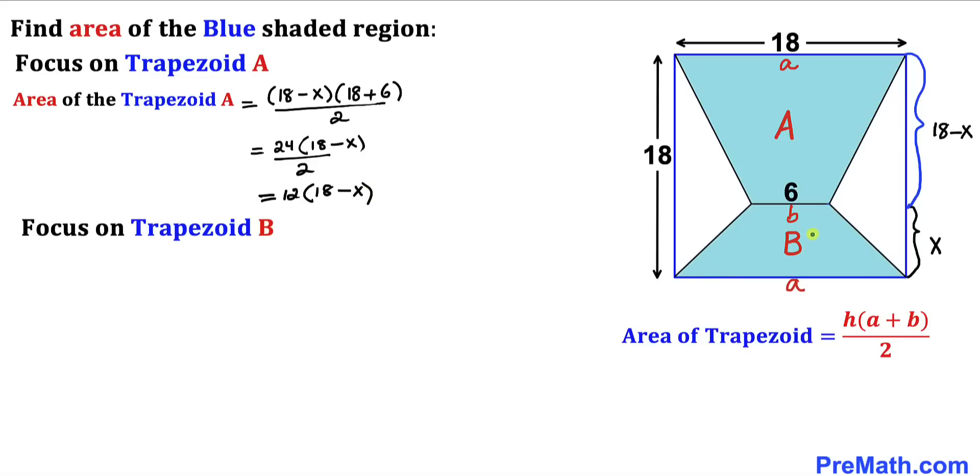And now let's focus on this trapezoid B. Let's go ahead and calculate the area of this trapezoid B now. We know our height is X and our A and B are given to us. 18 is our A value. Let's go ahead and fill in the blanks, so we're going to be using this formula once again. So therefore we got our height X times (18 + 6) all over 2.